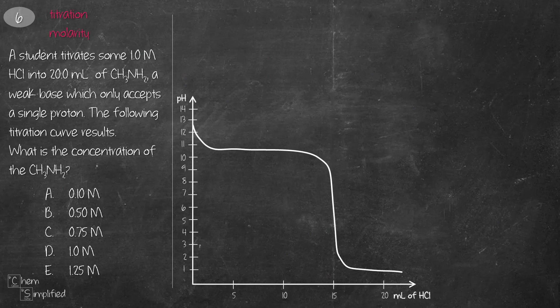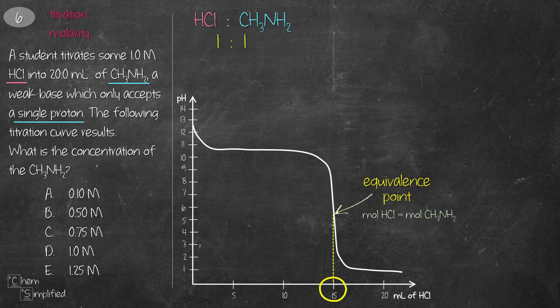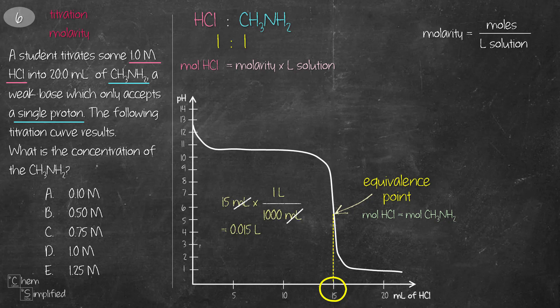This is a titration question with the titration curve given between HCl and CH3NH2, which accepts one proton from HCl, and that makes the ratio between them 1 to 1. Now we need to find the concentration of CH3NH2. From the concentration curve, we can find the equivalence point, which means the mole of HCl is the same as the mole of CH3NH2. At that point, 15 ml of 1 molar of HCl was used. Using the molarity equation, we can find the mole of HCl. Since the equation involves liter of solution, don't forget to convert 15 ml into liter, which gives us 0.015 liter. Plug that into the equation, and that gives us 0.015 mole for HCl.